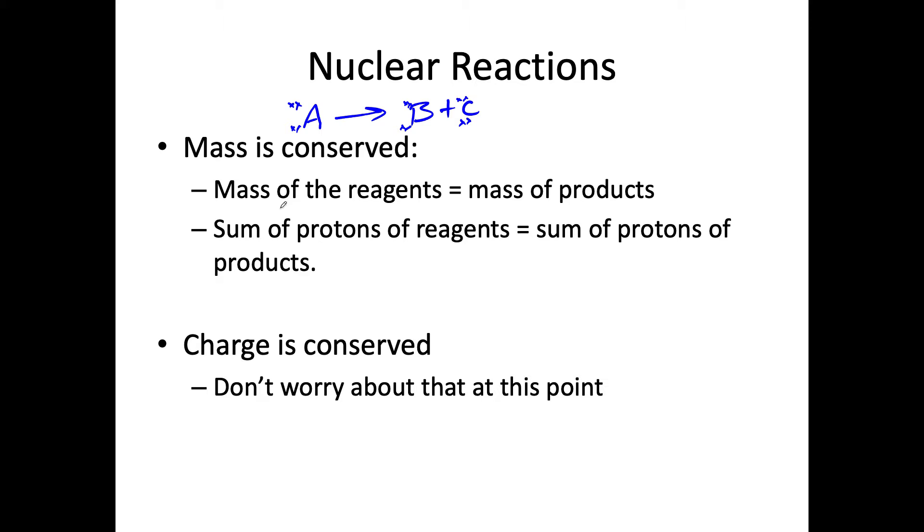Mass is conserved. So to the left of the reagents, these are the left of the arrow, and that mass, the sum up here, needs to be equal to the mass of the products, which is the right of the arrow. That means these two up on top must be added together, must be equal to what's on the left.